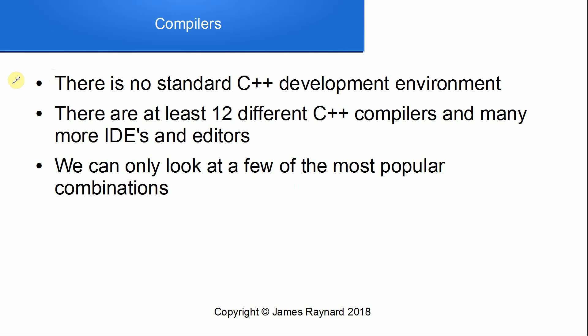This is a bit of a problematic area if you're learning C++. There isn't any standard C++ development environment. With Java you can download the official compilers from Oracle, which used to be Sun, but there's nothing like that in C++. There are at least 12 different C++ compilers — I looked them up before making this video. I could only think of about three or four, but there are actually at least 12, most of which I didn't recognise, or only vaguely.